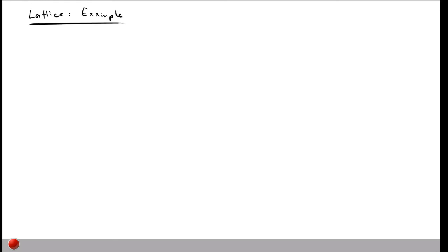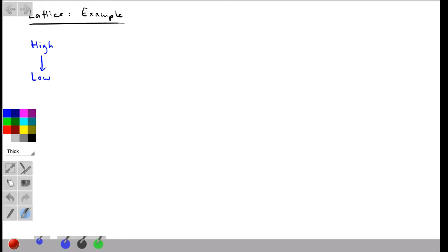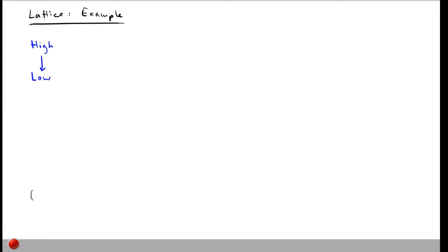The simplest kind of lattice is the one we've already seen informally in previous examples, where we have exactly two security classes called high and low. To express that high means more secret than low, I point from high to low using an arrow. This arrow notation always goes from the more secret class to the less secret class.